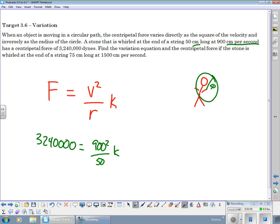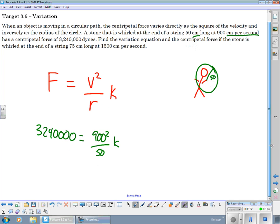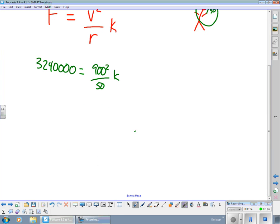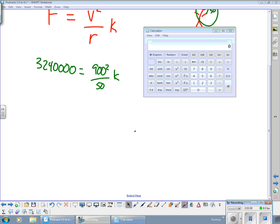So then at that point, you're going to go through and divide all that out. So, 900 squared is 810,000 divided by 50 equals 16,200.